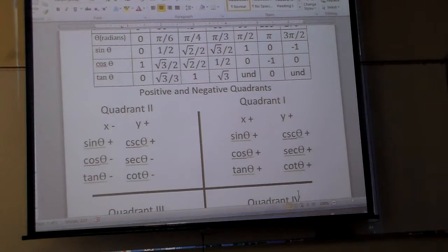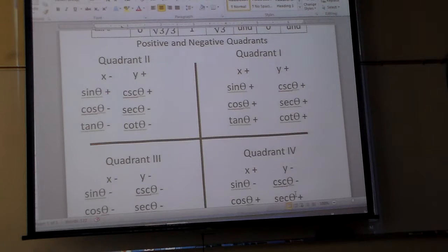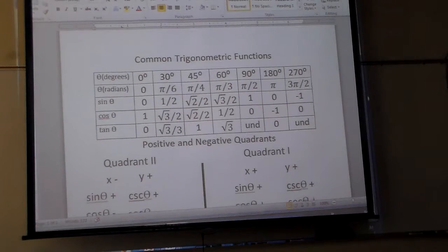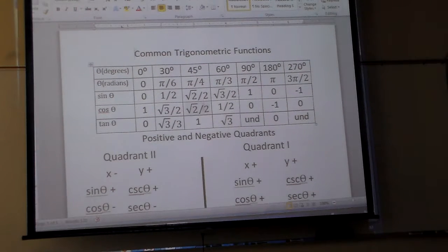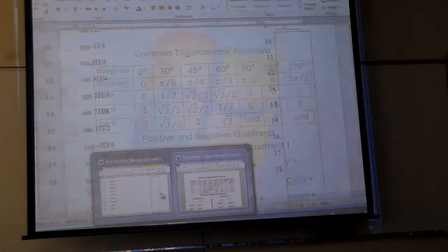So, it's cosine, right? What is cosine in quadrant 4? Positive. So therefore the answer is positive square root of 2 over 2. Okay? And let's see if we're right. Yay!